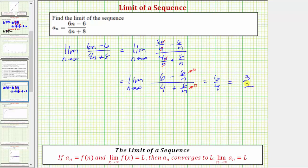Because this limit is equal to three halves, we now know that a sub n converges to three halves. This means as we use this formula to generate more and more terms in the sequence, the value of the terms will approach three halves.